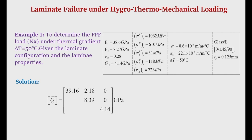We will try to understand this with the help of an example. In our previous lectures we understood how hygro-thermal residual stresses are induced in different laminae of a laminate, and in our last class we understood how to determine the first ply failure load under mechanical loading. Today we will see how to do the failure analysis when a laminate is subjected to combined hygro-thermomechanical loading.